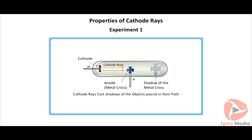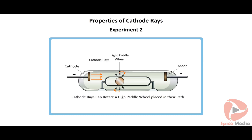Properties of cathode rays — Experiment 1: J.J. Thompson and others placed an object between the cathode and anode; a shadow of the same size and shape as the object appeared on the wall opposite the cathode. Conclusion: cathode rays travel in straight lines parallel to each other. Experiment 2: cathode rays fall on a light paddle wheel placed between the cathode and anode, causing the wheel to rotate. Conclusion: cathode rays are made up of small particles that have mass and kinetic energy.